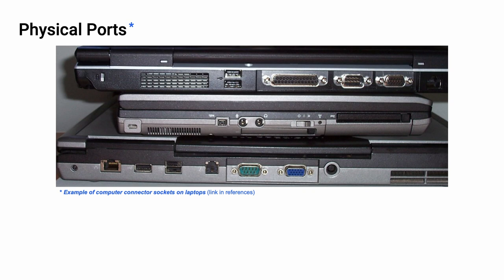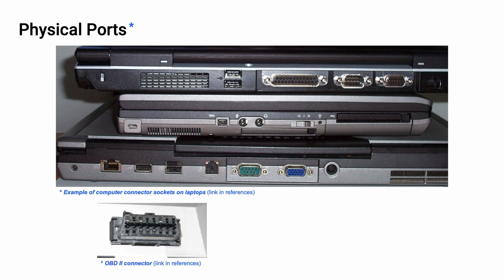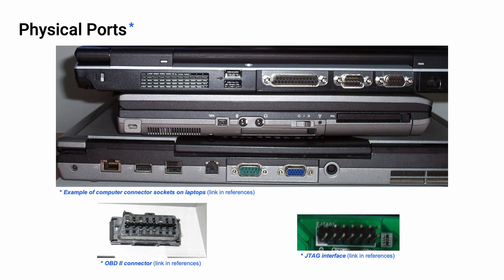Our first, simplest, and most obvious area within the realm of attack surface is that of the physical port. Here we can see the physical ports on various laptops: USB, serial, video, audio, PCMCIA, Ethernet, and SPDIF. There's also the OBD2 connector, present on just about every vehicle in recent history, and the JTAG interface for those who deal with board-level work. All of these physical ports are holes in the box. There's one more hole not pictured: the radio antenna, because if we're communicating via electromagnetic radiation, that's a hole in the box and we need to take it into consideration.